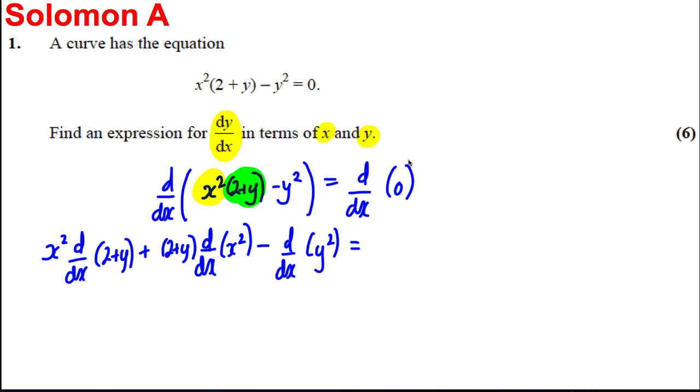Now let's do a bit of implicit differentiation. This clearly is x squared. Differentiate this with respect to y, you get one and multiply by dy by dx. Here we're going to have plus 2 plus y, and differentiate x squared with respect to x is simply 2x.